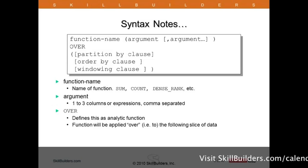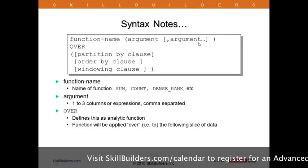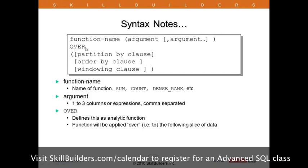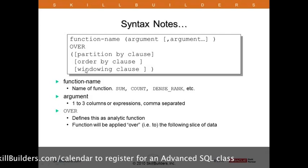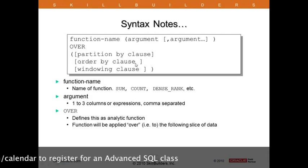Let's look at the general syntax for an analytic function. It's a function name like SUM, MIN, MAX, or AVG, taking one to three arguments depending on the function. The keyword OVER is critical — we need the keyword OVER. Then we have three clauses, all optional, but you need at least one: the ORDER BY clause, the PARTITION BY clause, and the windowing clause. The OVER keyword is what defines it as an analytic function rather than an aggregate function.